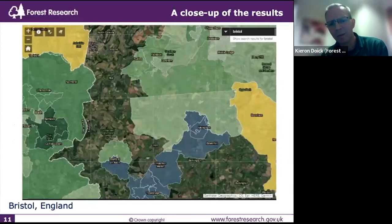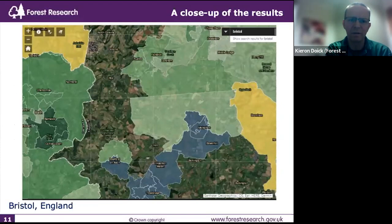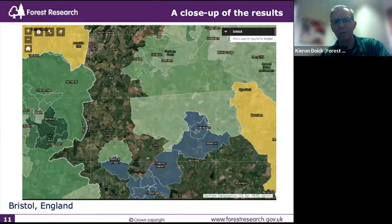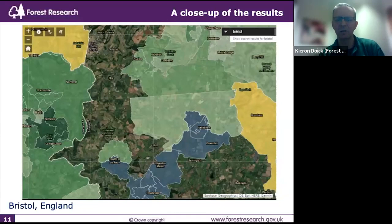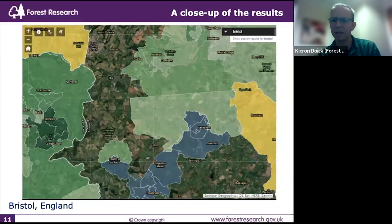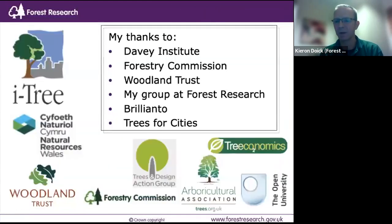Zooming into the map, you can see around Bath that some wards have much darker canopy cover, yet have wards right next to them where canopy cover is nowhere near as high. It's really important that we understand the variability across our towns and cities so we can start to address the differences. Some wards showing yellow here have been booked out. Please focus on the grey ones and we'll get it done.